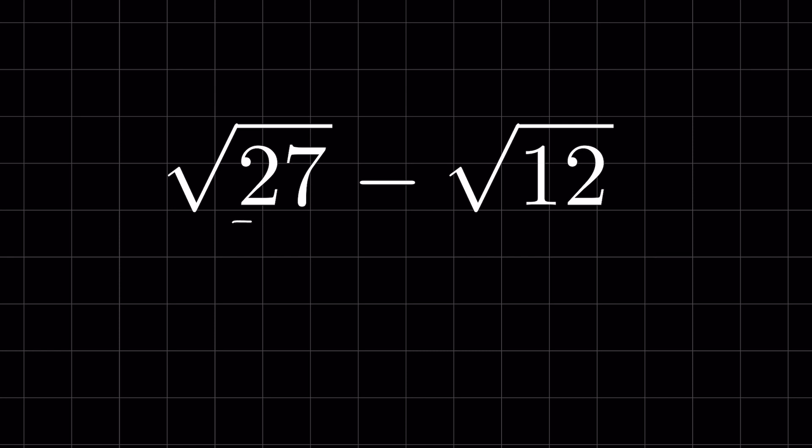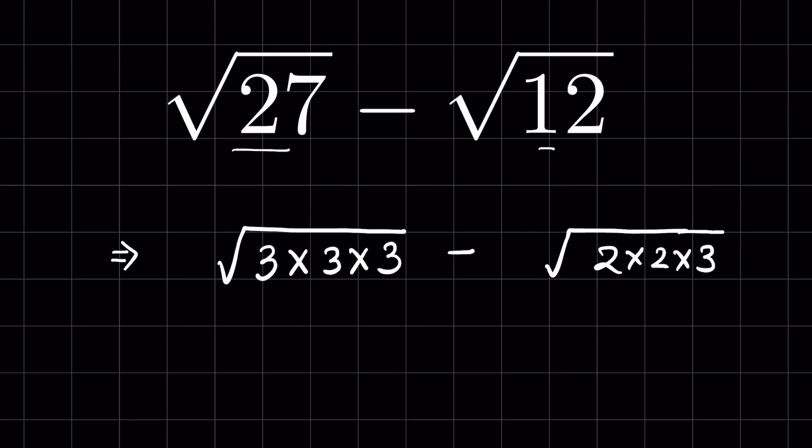To subtract the radicals first we will have to simplify the radicals. Now 27 we can write it as 3 times 3 times 3 under square root minus square root of 12 as 2 times 2 times 3 under square root.